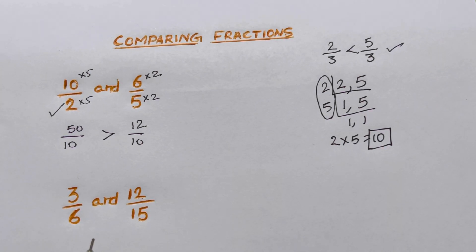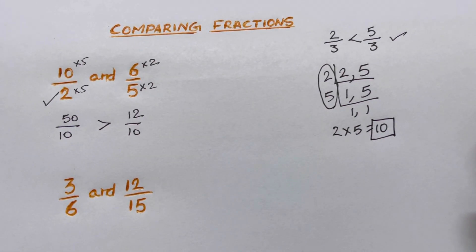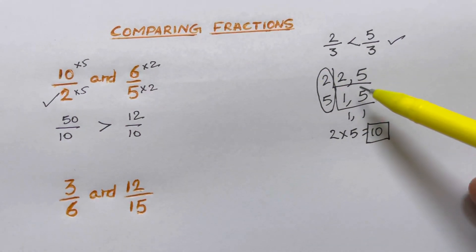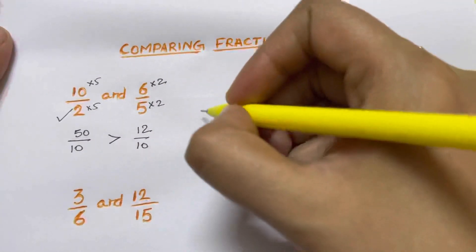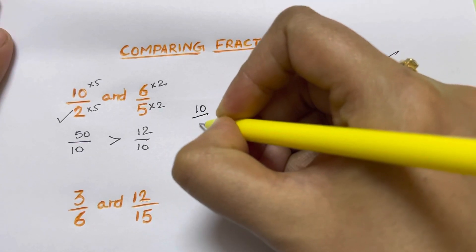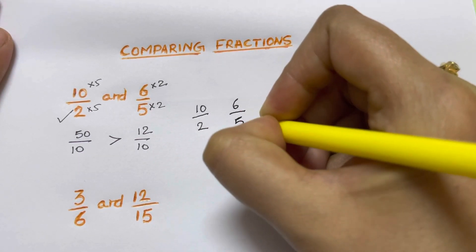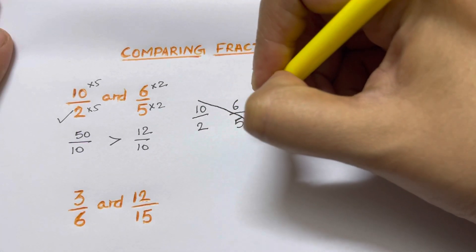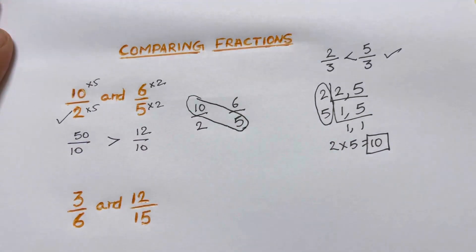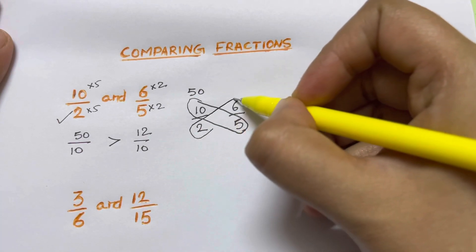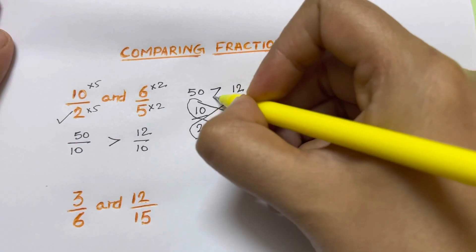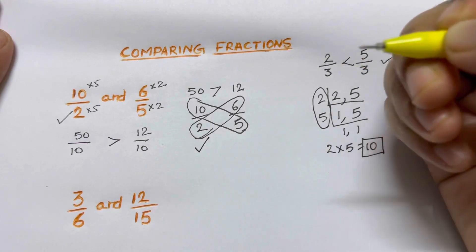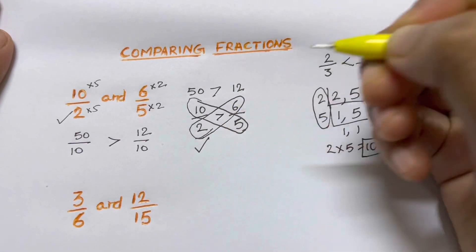Now I'm going to show you the shortest trick to compare fractions in your mind — no LCM, no extra multiplication needed. Just write down the fractions: 10 over 2 and 6 over 5. You just need to cross multiply — bubble up. 5 times 10 gives you 50. Then cross multiply the other side and bubble up: 2 times 6 is 12. Then compare: 50 is greater than 12, so the fraction 10 over 2 is greater than 6 over 5.